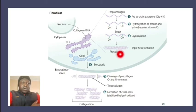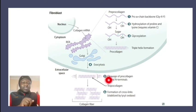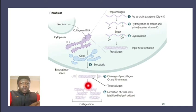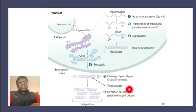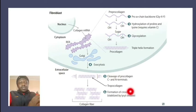The pro-collagen triple helix is released via the Golgi apparatus through exocytosis. Loose ends are cleaved (N- and C-terminals removed). Cross-links are then formed by lysyl oxidase, an enzyme requiring copper. Deficiency of copper or impaired lysyl oxidase activity leads to Menkes disease.